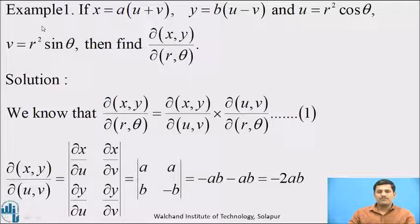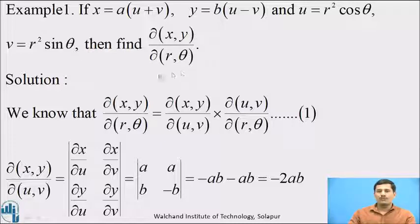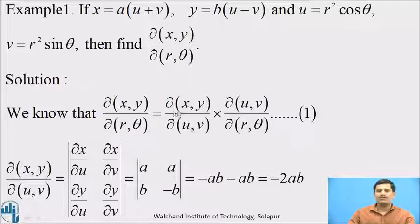Let us consider some examples. Example number 1: if X equals A into the bracket U plus V, Y equals B into the bracket U minus V, and U equals R squared cos theta, V equals R squared sin theta, then find the Jacobian of X, Y with respect to R and theta. Here X and Y are composite functions of R and theta. Therefore the Jacobian of X, Y with respect to R, theta is the product of the Jacobian of X, Y with respect to U, V and the Jacobian of U, V with respect to R, theta.